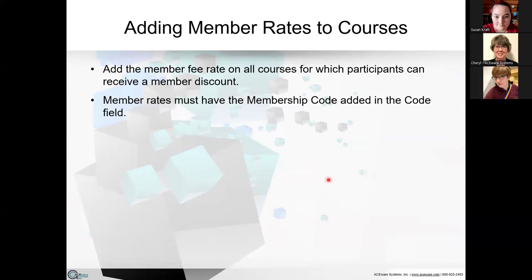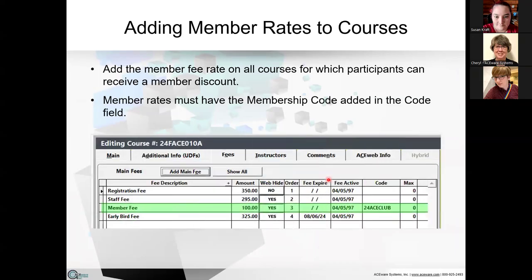Now that we've got our membership course set up, we're ready to start entering member rates to courses. You're going to add a member fee rate on all courses where participants can receive a member discount. The member rates you set up also have to have the membership code added in the code field. Here's an example: this is my Mastering Student Manager course where I've set up a member rate. Members of the Ace Club membership would pay $100, and I've entered that code because they must have that code to enroll in this course.